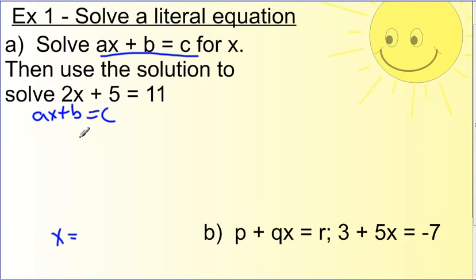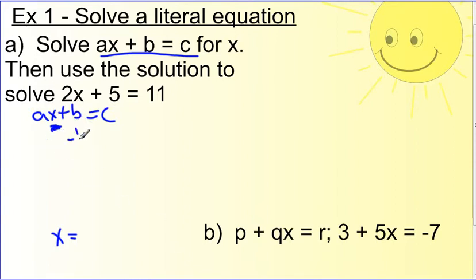So when we solve this, we follow the same five steps. Step 1: no parentheses. Step 2: combine like terms — there's nothing to combine since they're all different variables. Step 3: I do not have an x on both sides. Step 4: get rid of the adds and subtracts. This b is being added, so if we subtract b from both sides, we get ax because these cancel, and we leave it as c minus b.